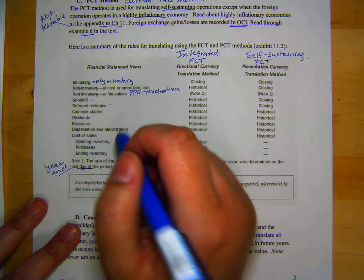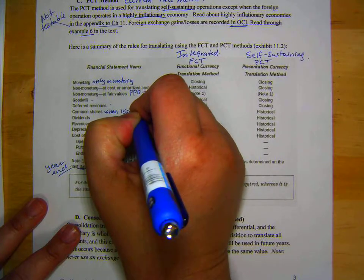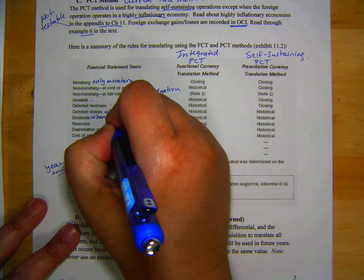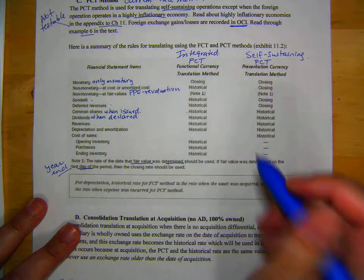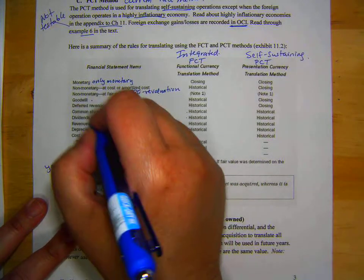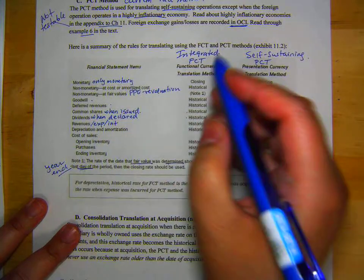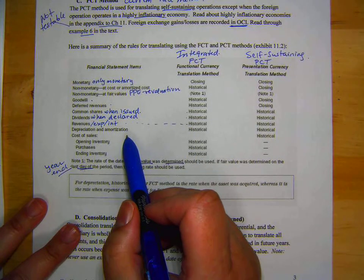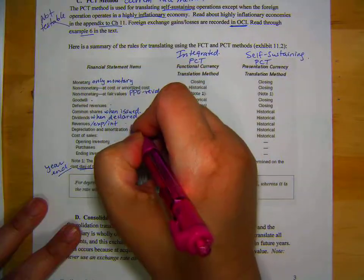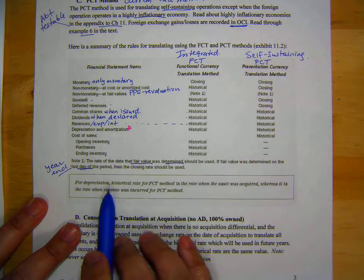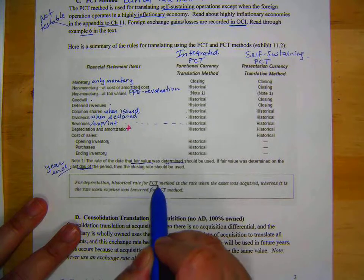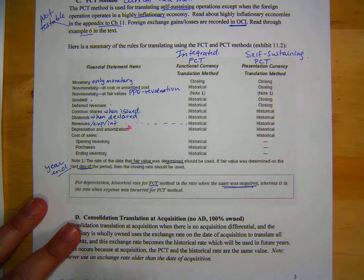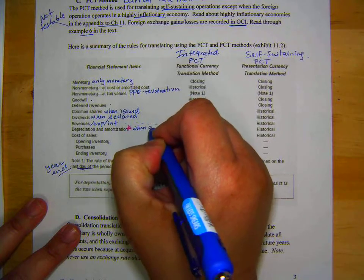Revenues is historical, common shares are when issued, and that is also historical. Dividends when declared. And that's at historical. Revenues, expenses, interest, etc. are at historical. Depreciation and amortization. So, this one's a little different, so you have to be careful. If you look down here, for depreciation, the historical rate for FCT is the rate when the asset was acquired, but when the expense was incurred for PCT, but we'll think of that later. So it's when asset acquired.